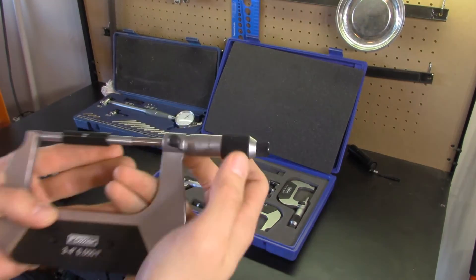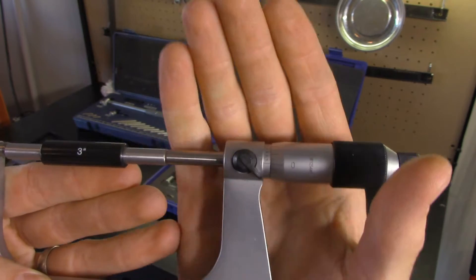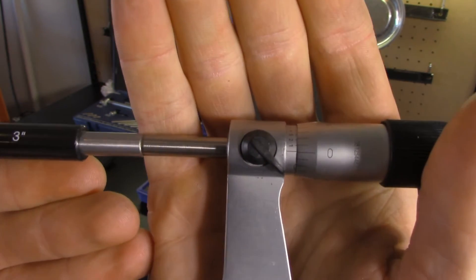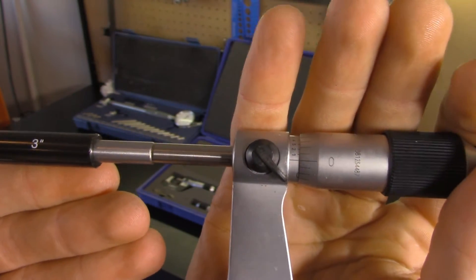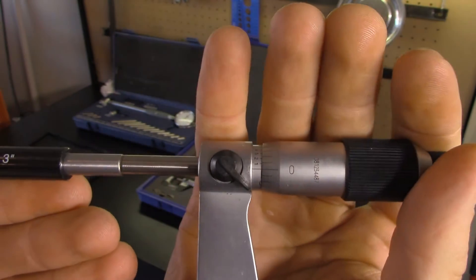Your micrometer should read to the distance of the standard. If it does not, you need to adjust your micrometer. In this case, the three to four inch micrometer zeroed out using the three inch standard.